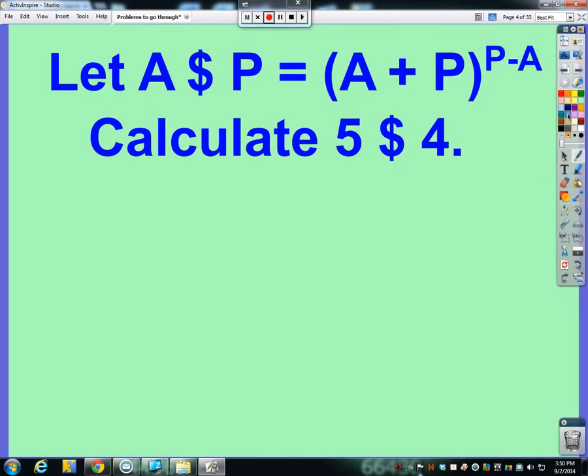Now crazy function. Sometimes you're going to see a problem like this where there's a symbol that you don't really know what in the world that means mathematically. And really it doesn't mean anything special mathematically. This is kind of a made-up problem. So all this is saying is that if we have some number A, and then you see this symbol, in this case a dollar sign, and then some other value P. The order here is very special. The A is the first number, P is the second number.